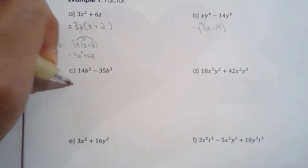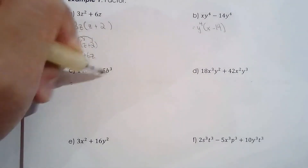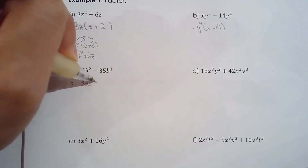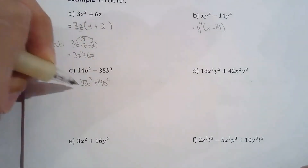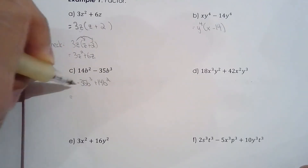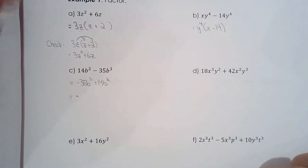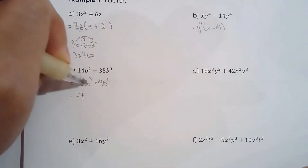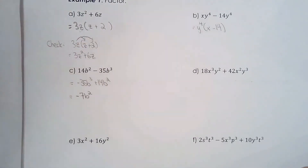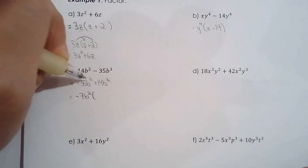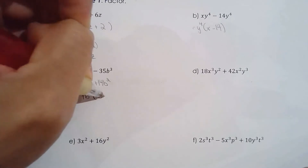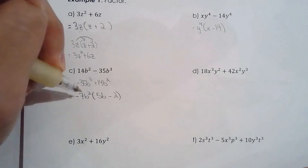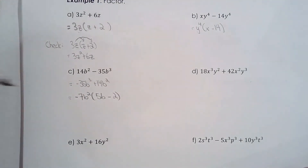Here the expression should be rewritten in standard form — the b cubed term goes first. We also don't like the leading term being negative, so the common factor will be negative. Between 35 and 14, the greatest common factor is 7. The variable b: one term has three factors, the other has two, so we take two factors of b. The answer is negative 7b squared times (5b minus 2).